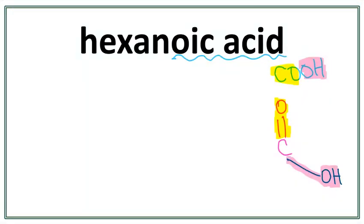Let's look at the parent chain. Hex right here tells us that there are six carbons present in the longest carbon chain. This An here tells us that this is an alkane, meaning that there are only single bonds between carbons in the parent chain.